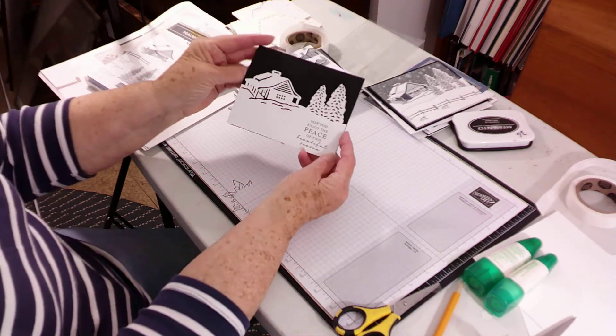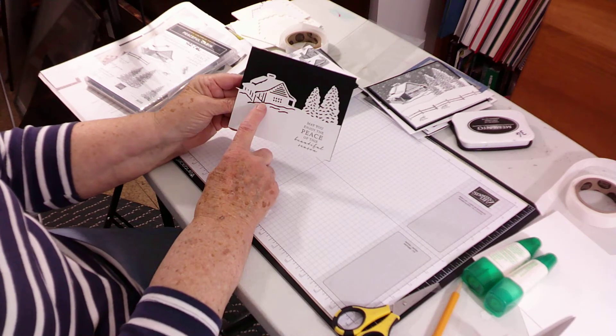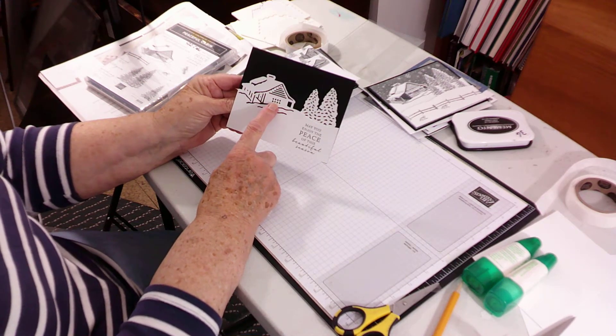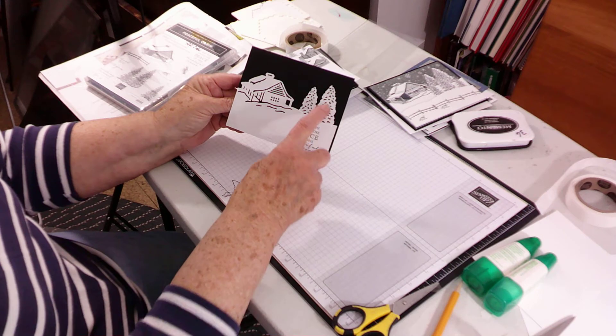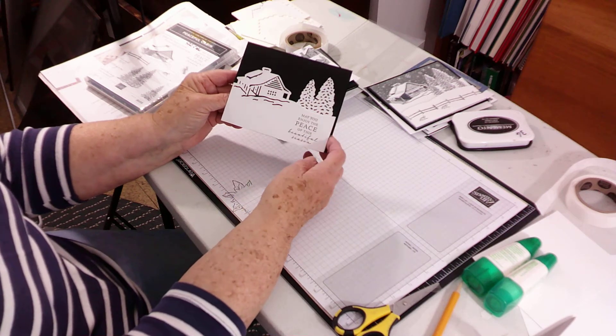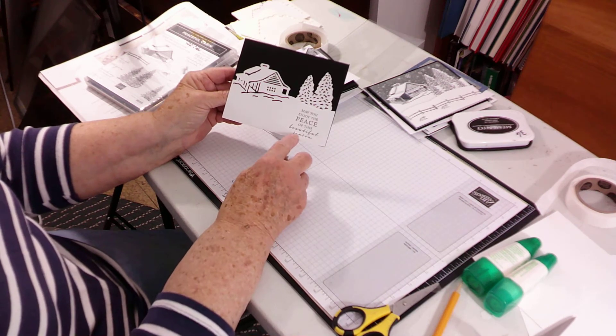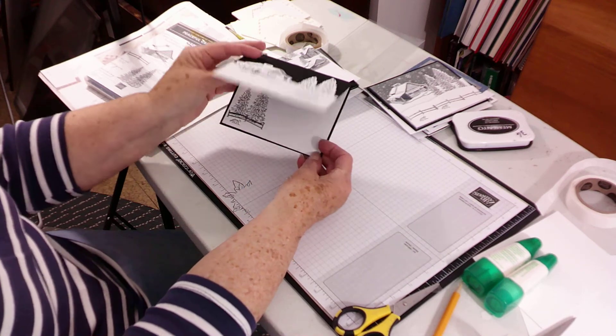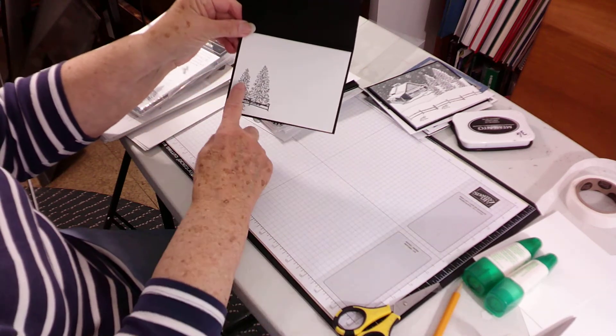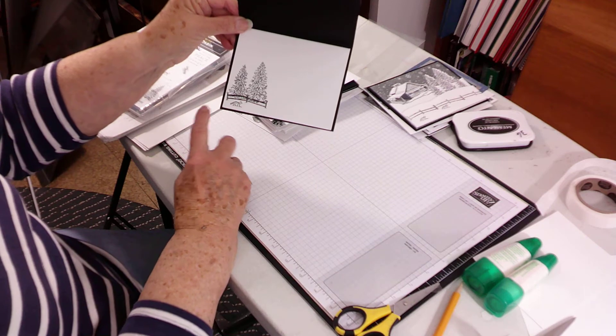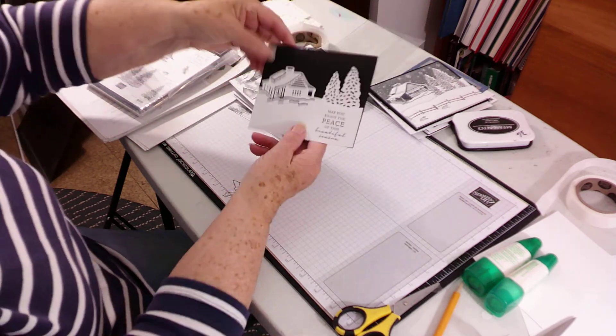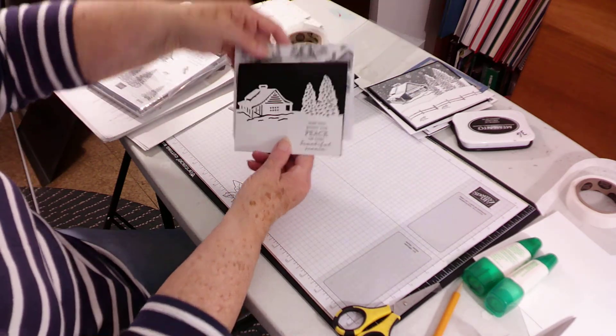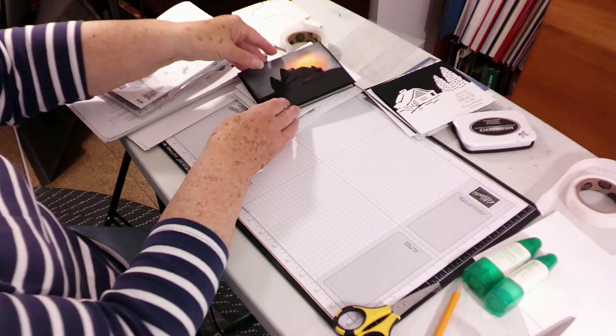And this one I used just the dies. The die for the cabin and the snow and then the die for the trees and put it on black. I do have a Christmas greeting on this one. And then on the inside I did a couple trees, the fox and a fence. And I put the cabins on that envelope.